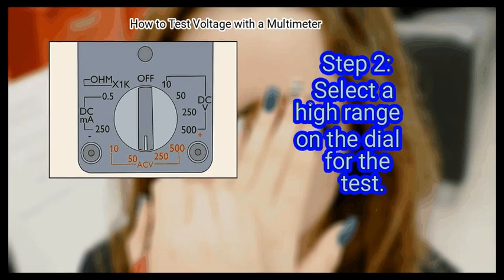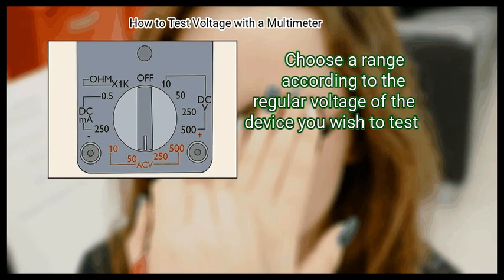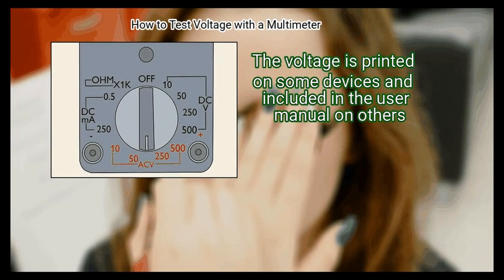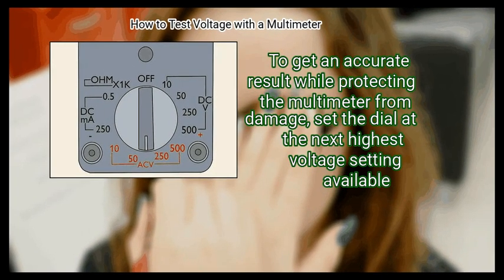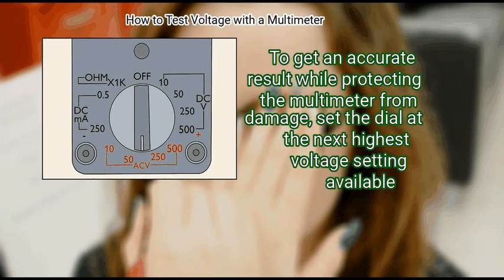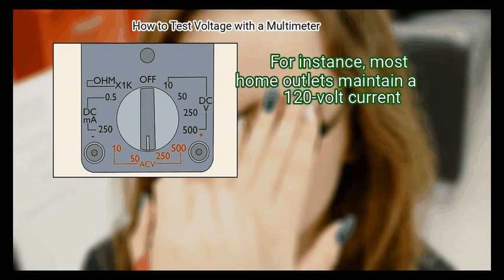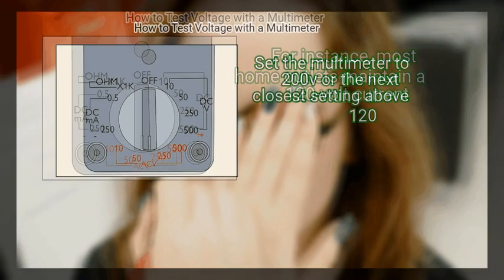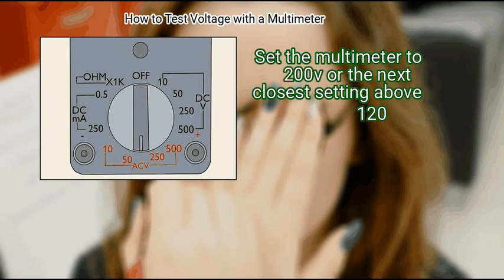Step 2: Select a high range on the dial for the test. Choose a range according to the regular voltage of the device you wish to test. The voltage is printed on some devices and included in the user manual on others. To get an accurate result while protecting the multimeter from damage, set the dial at the next highest voltage setting available. For instance, most home outlets maintain a 120 volt current. Set the multimeter to 200V or the next closest setting above 120.